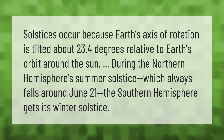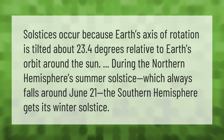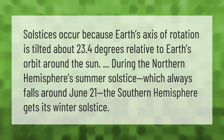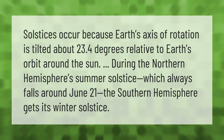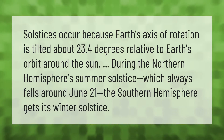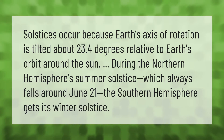Solstices occur because Earth's axis of rotation is tilted about 23.4 degrees relative to Earth's orbit around the sun. During the northern hemisphere's summer solstice, which always falls around June 21st, the southern hemisphere gets its winter solstice.